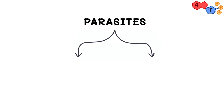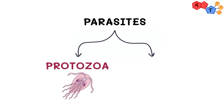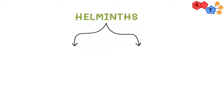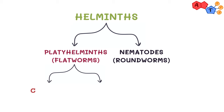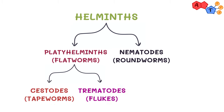Generally speaking, parasites can be divided into two main groups: protozoa and helminths. Helminths are then subdivided into two big groups: platyhelminths, which are flatworms, and nematodes, which are roundworms. The platyhelminths group is further categorized into cestodes, which are tapeworms, and trematodes, which are flukes. Keep in mind that worm infections are often accompanied by eosinophilia.